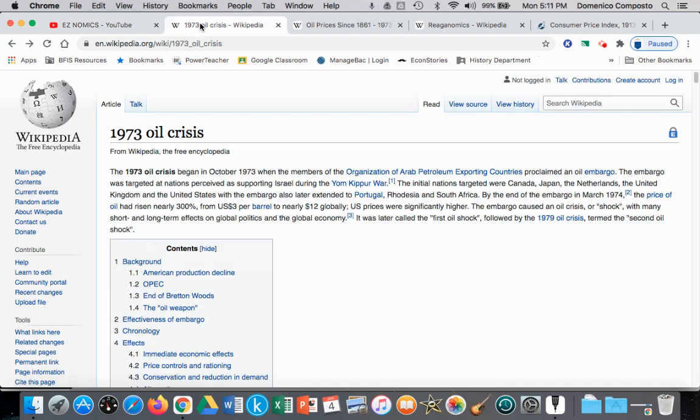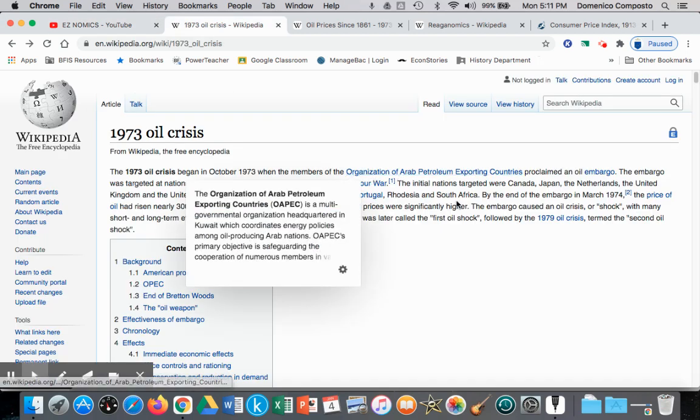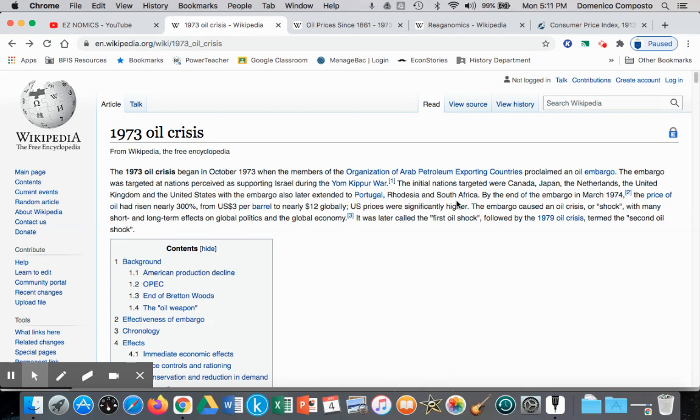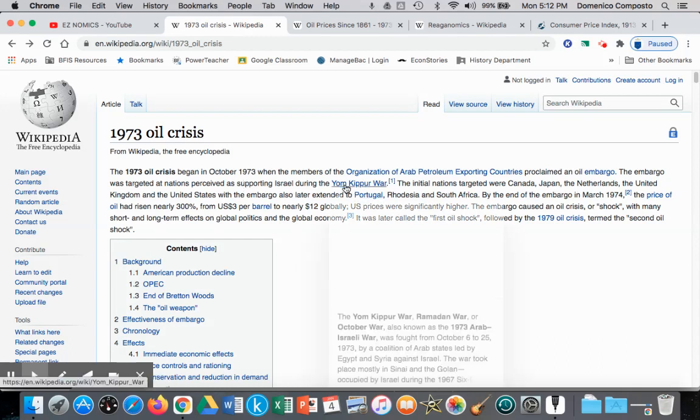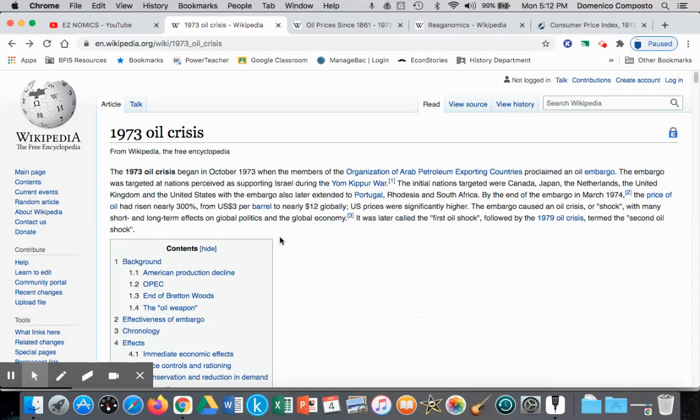Just to review, the 1973 oil crisis - OPEC nations retaliating against U.S., Canada, Japan, the Netherlands for their support of Israel in the Yom Kippur War decided to reduce the global supply of oil, and that caused the price of oil to rise from $3 to $12, a 300% increase.